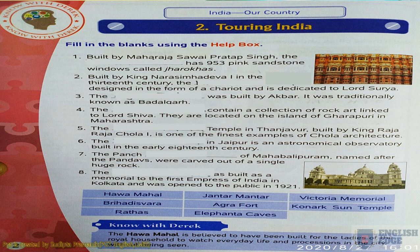Third question: the blank was built by Akbar and was traditionally known as Badalgarh, so the answer is Agra Fort. Fourth question: the blank contains a collection of rock art linked to Lord Shiva and is located on the island of Gharapuri in Maharashtra, so the answer is Elephanta Caves.